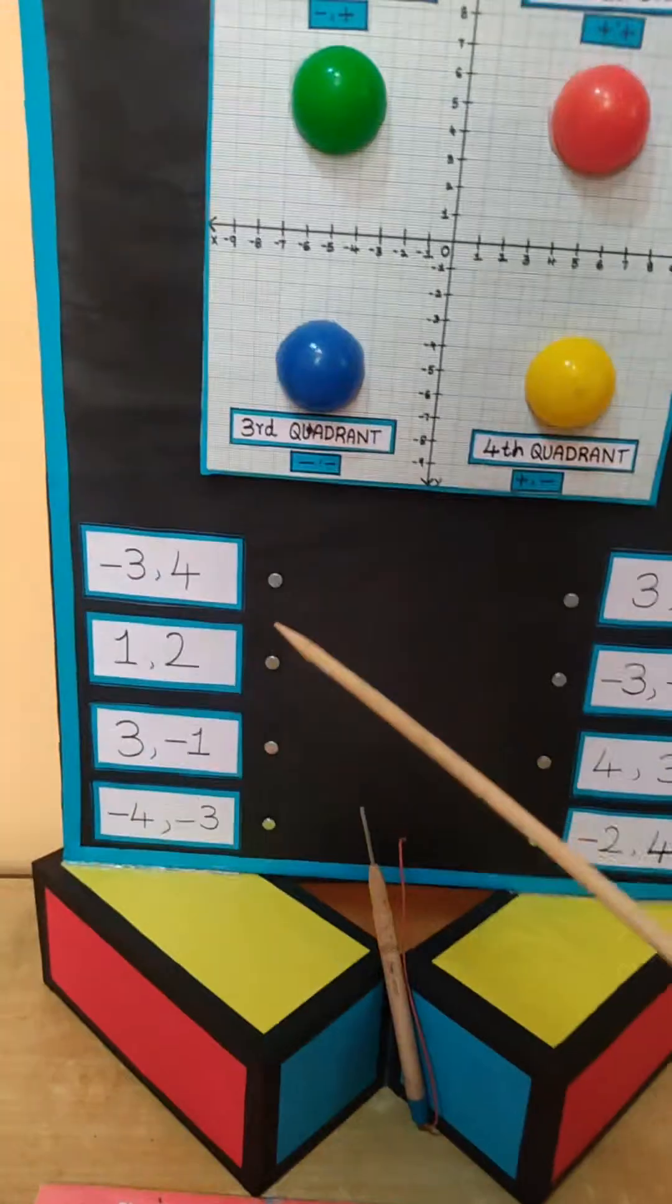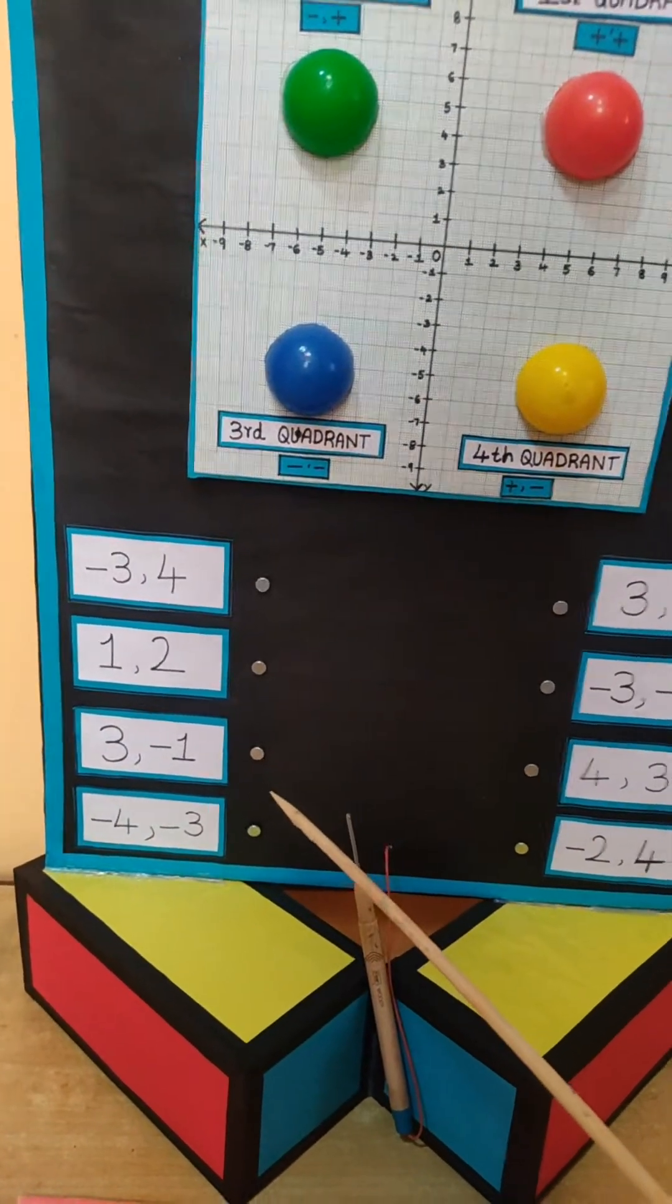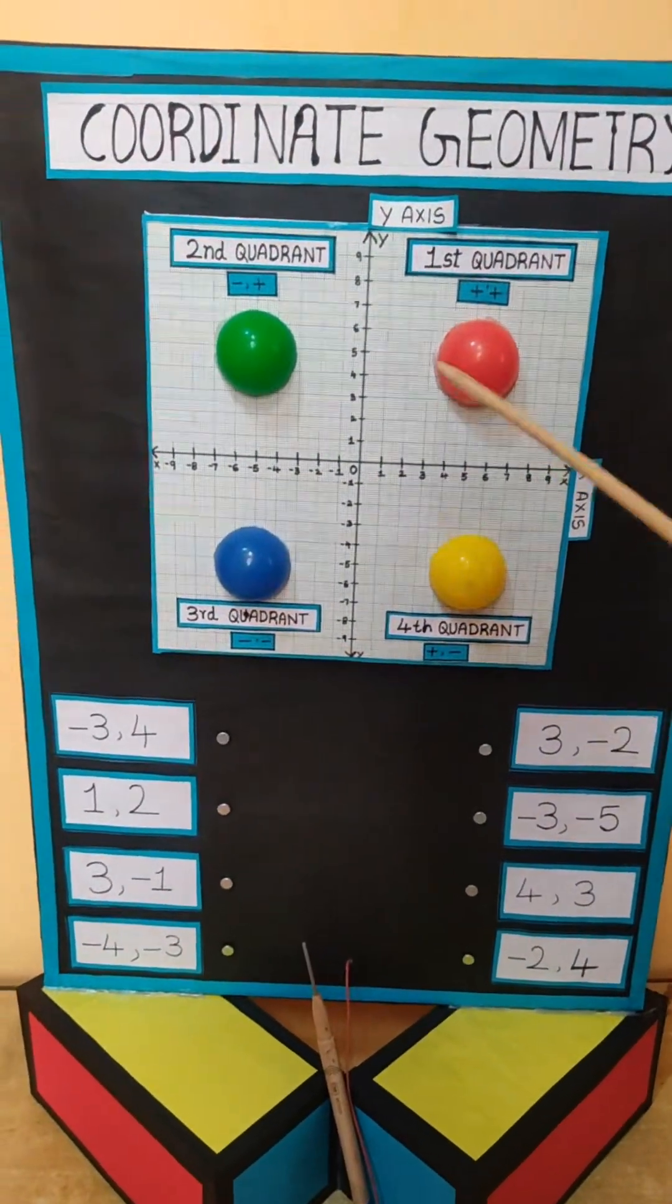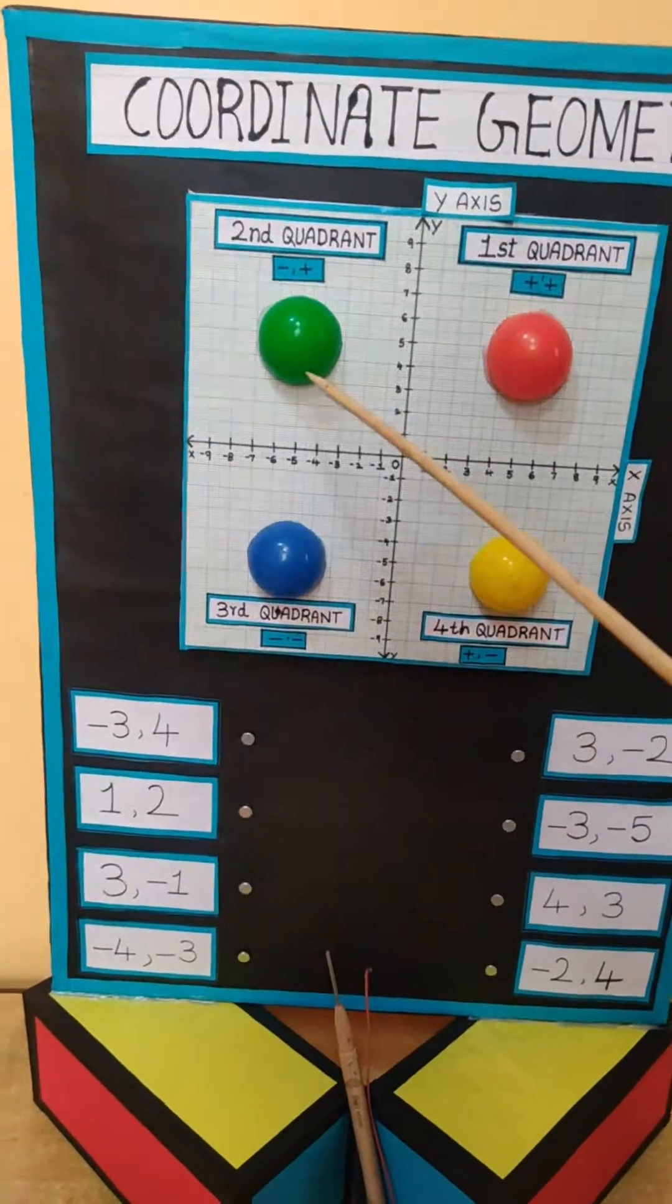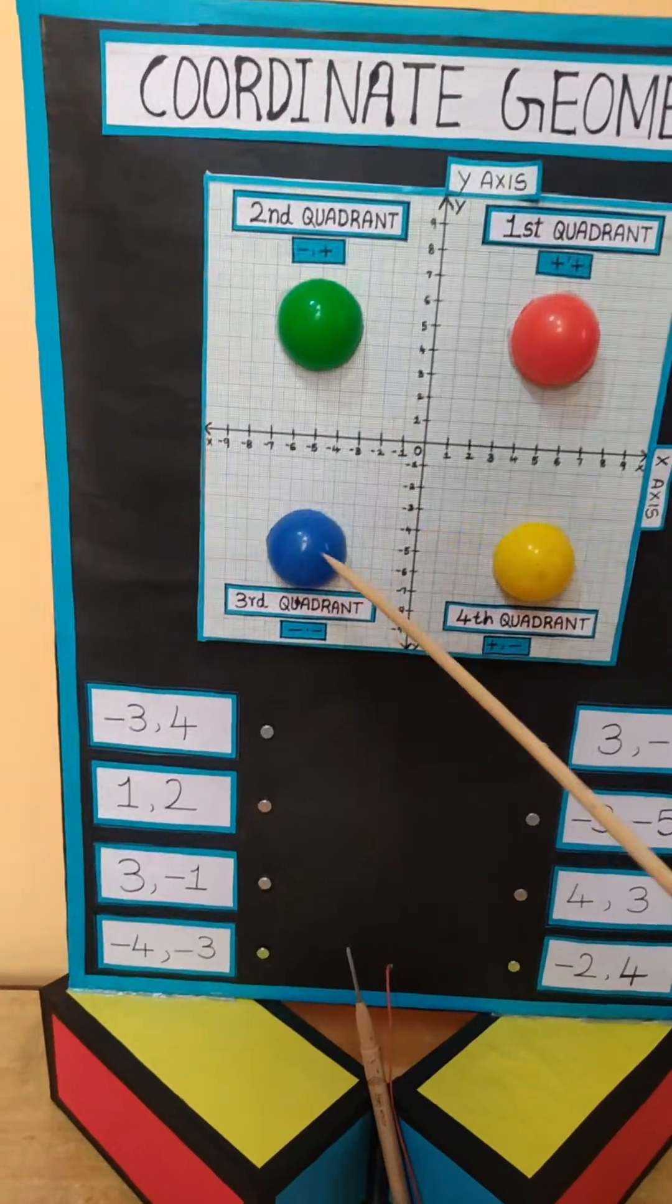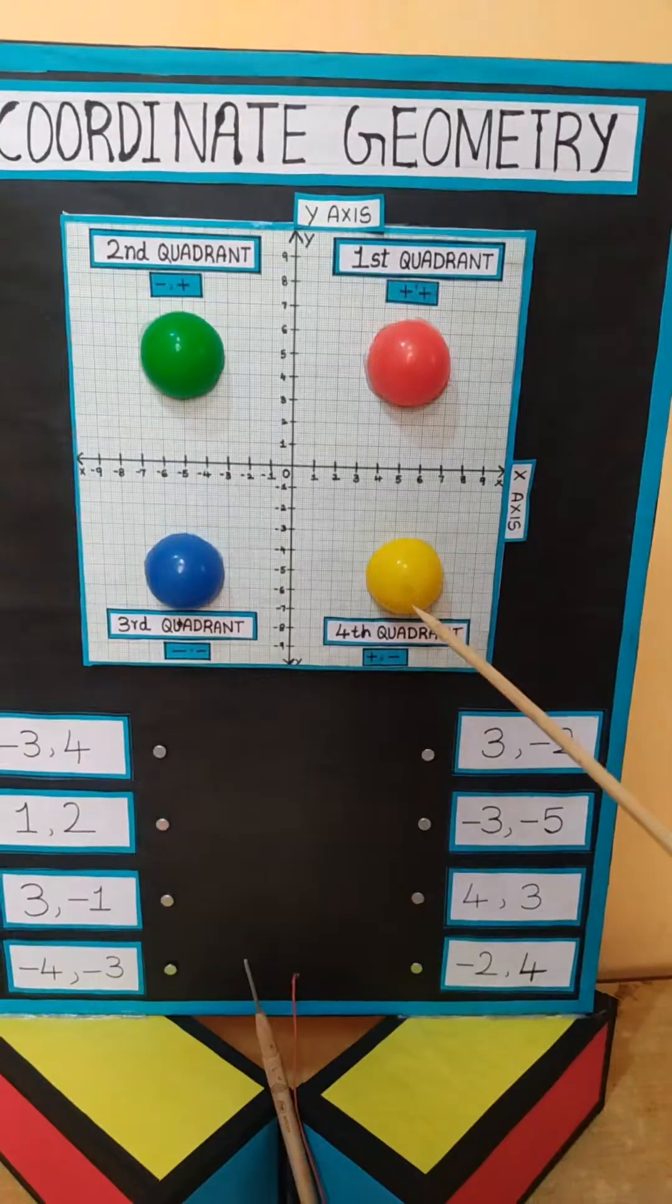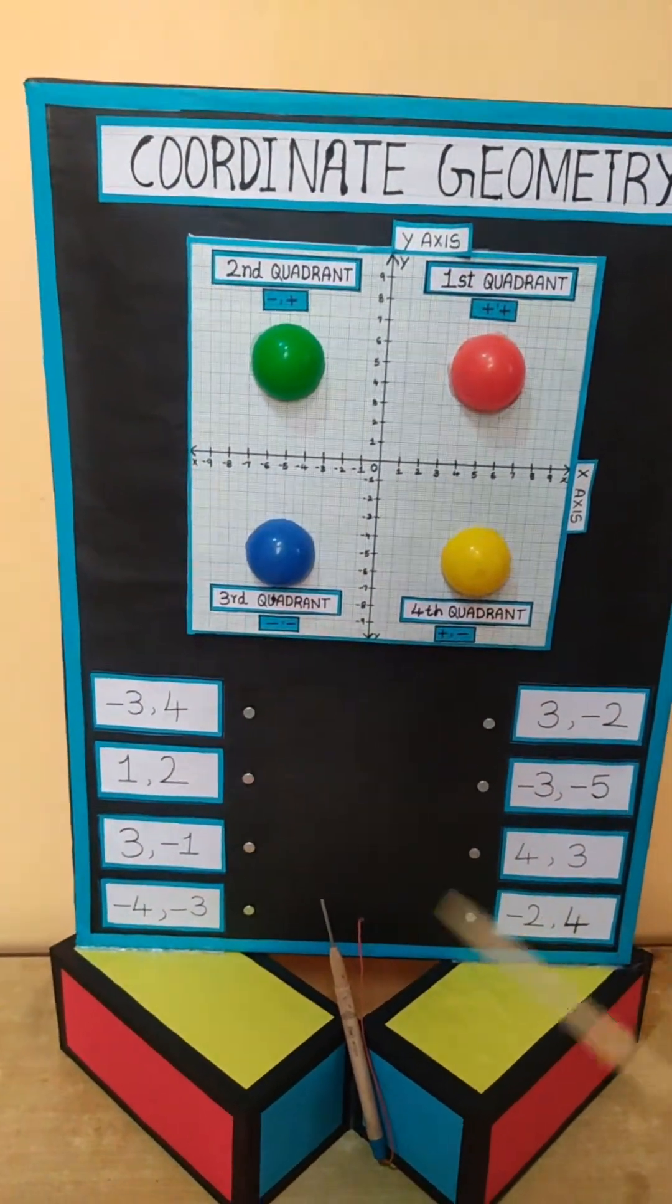If I select any of these nails in this working model, the appropriate quadrant's light will glow. We have kept the red light in the first quadrant, green in the second quadrant, blue in the third, and yellow in the fourth.